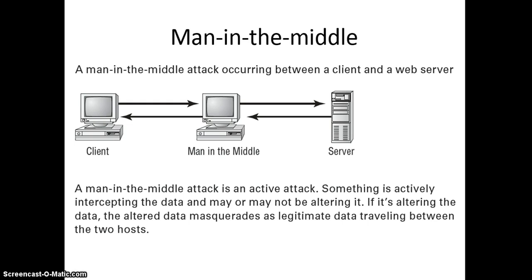A man-in-the-middle attack typically happens when somebody is able to intercept data and either passively listen, or intercept and alter it. Using something like a proxy, or Burp Suite as a tool, if you're able to be in line between somebody and the internet, you can see the traffic, manipulate the traffic, and give a new response back to them based on whatever information was submitted.